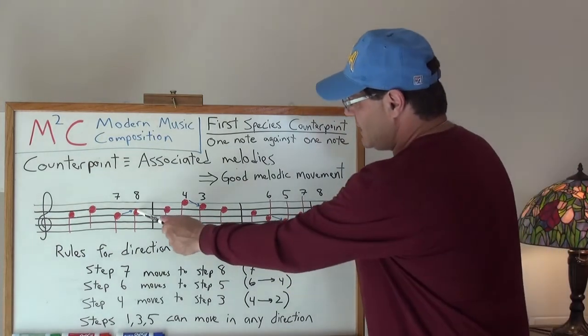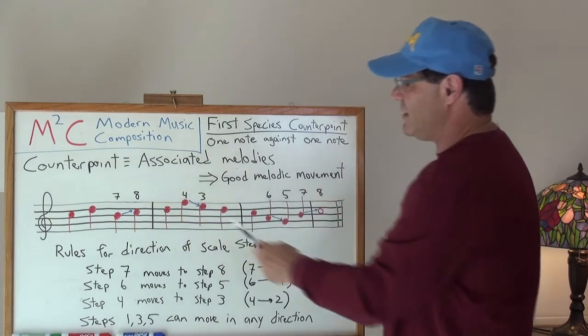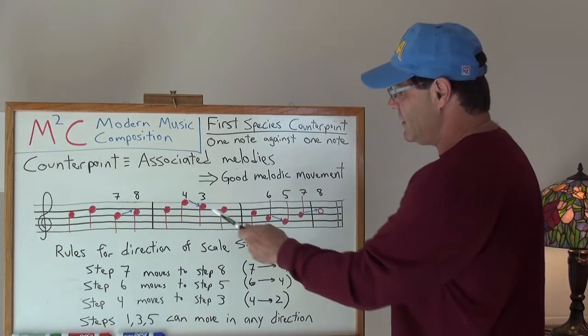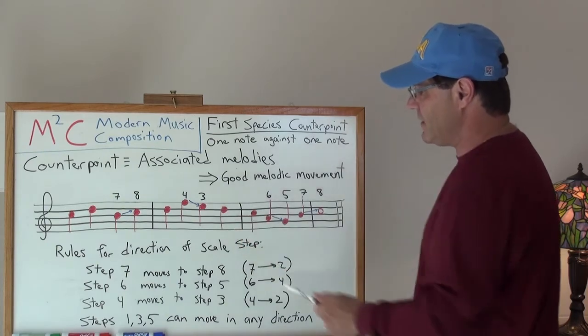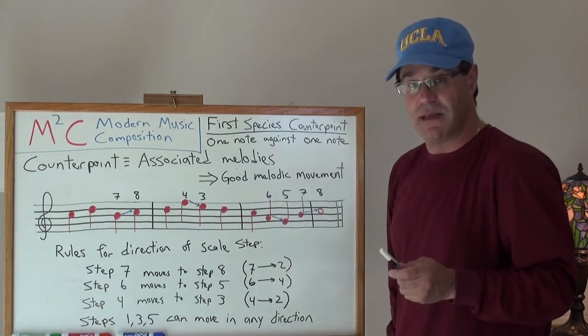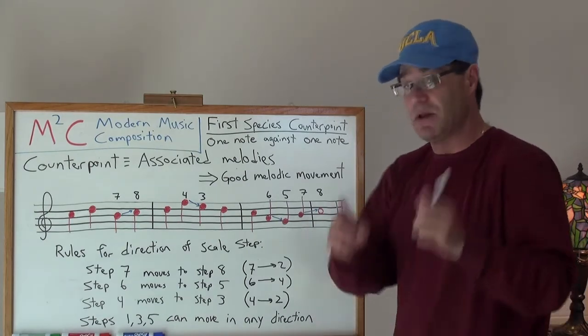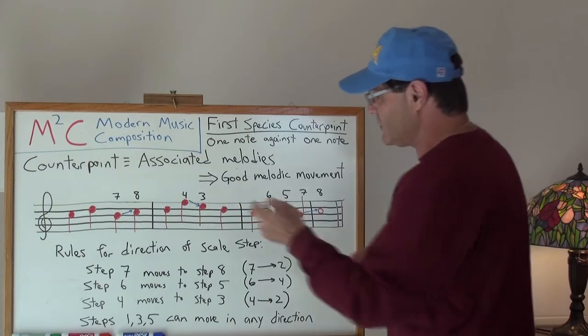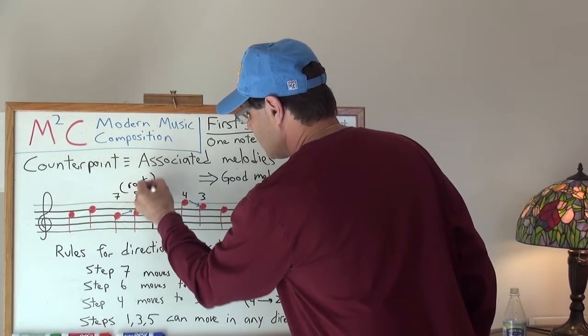So once you move into the key that you're in, or if you go to the third position in the scale step or the fifth position in the scale step, notice that we've got, we'll call this the root. Okay, which is eight.